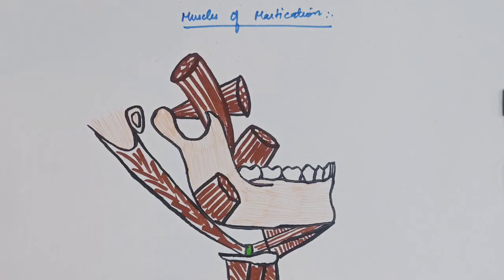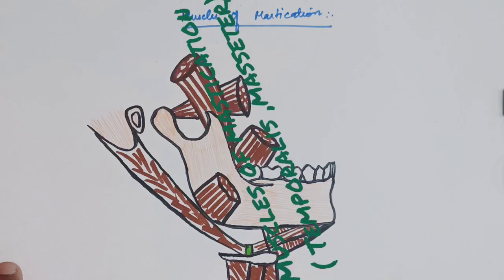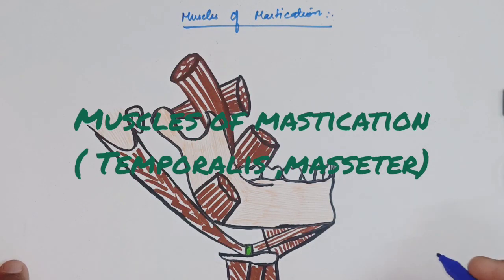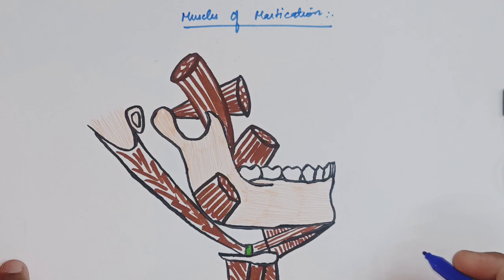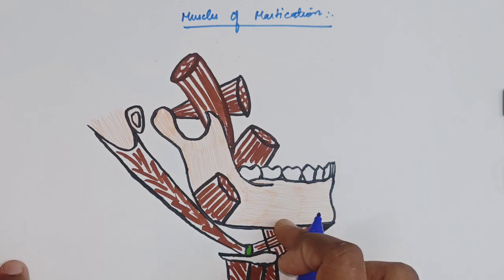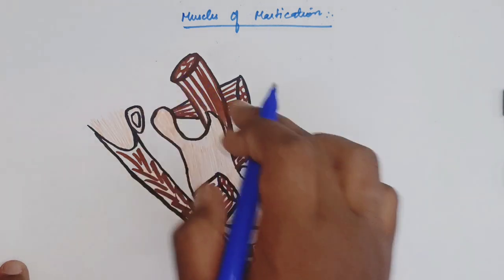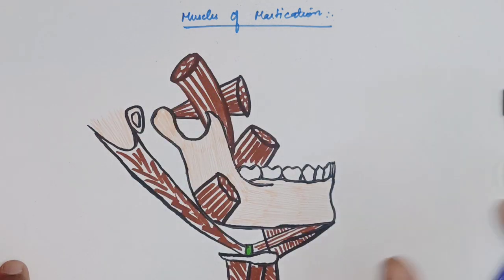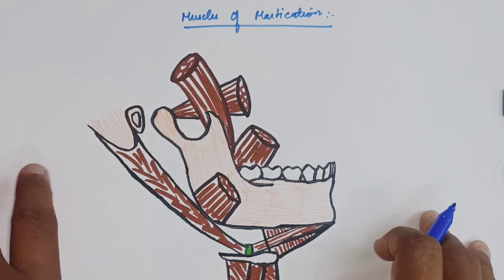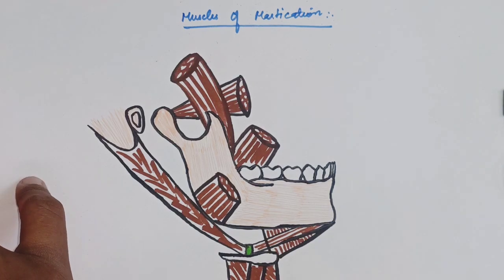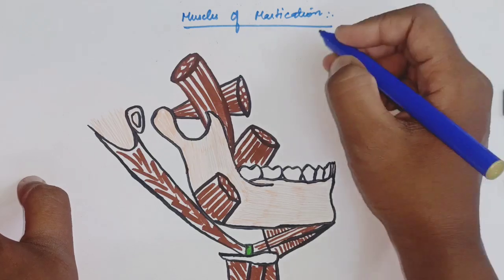Hi friends, welcome to our YouTube channel Odontology, the study of teeth. Today we will talk about the topic muscles of mastication. We use the masticatory process or chewing process, and the main concern is the mandible movements with the temporomandibular joint during the chewing process. Muscles of mastication are divided into two groups.